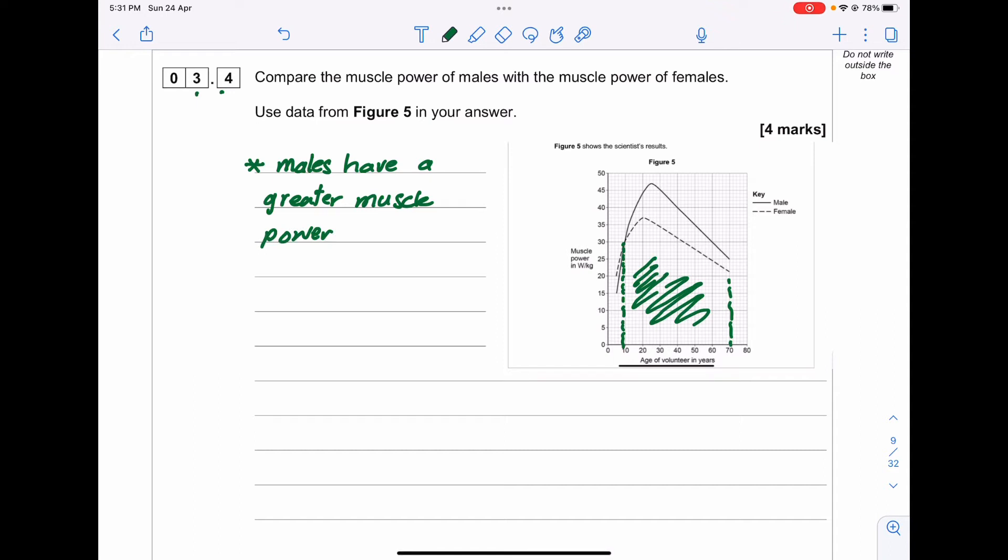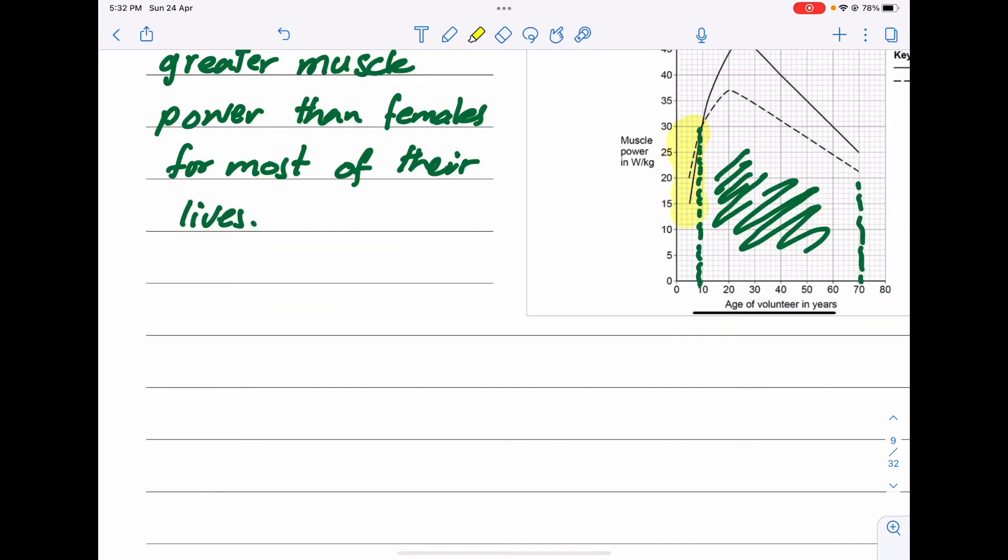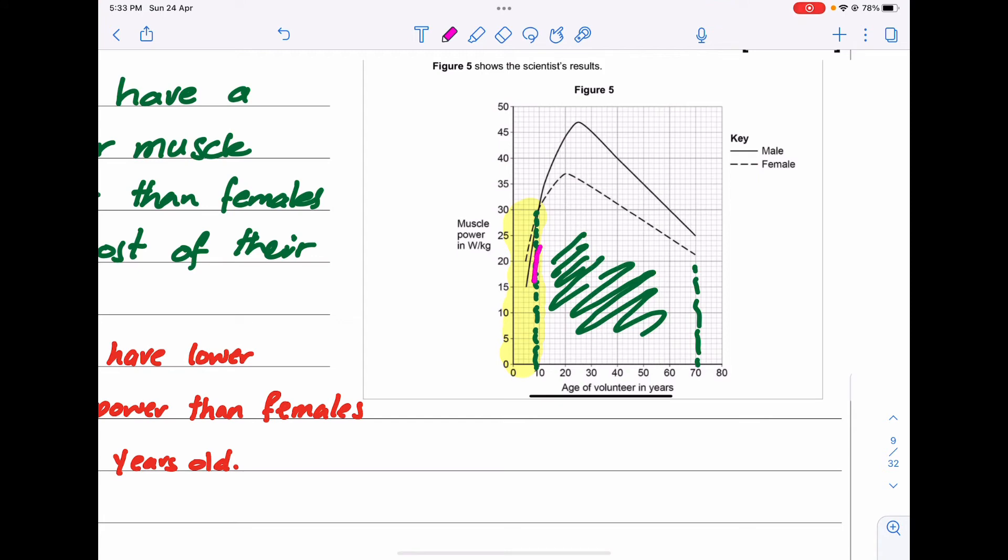But below 9 years old, males have lower muscle power than females. There's a similar pattern for both females and males - as age increases, the pattern goes up and then goes down.